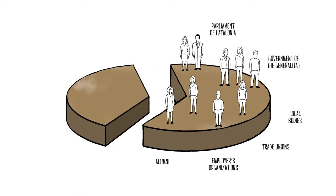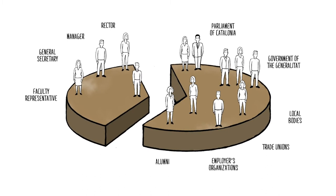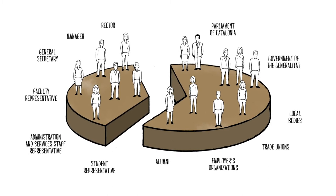The remaining six members out of the total 15 members that make up the body represent the university's governing council: rector, manager, general secretary, a faculty representative, a representative from the administration and services staff, and a student representative.